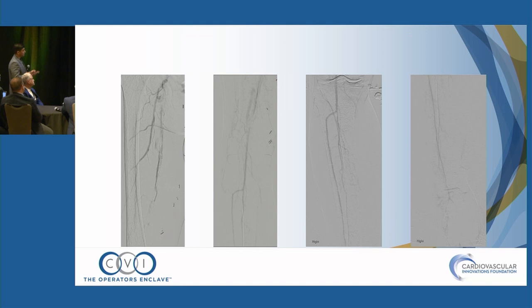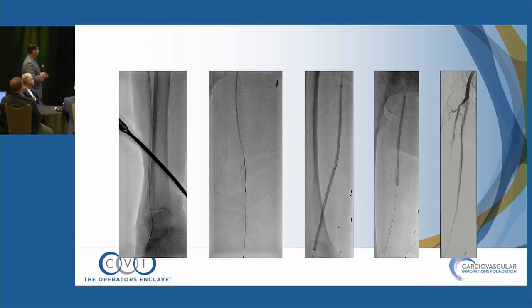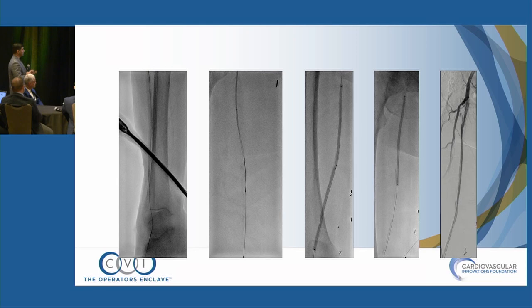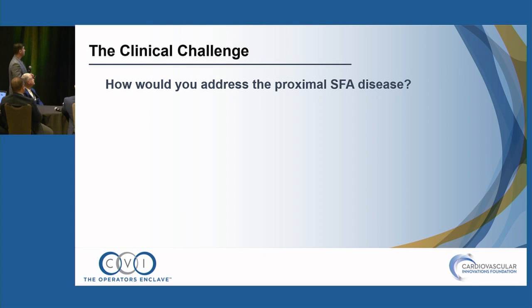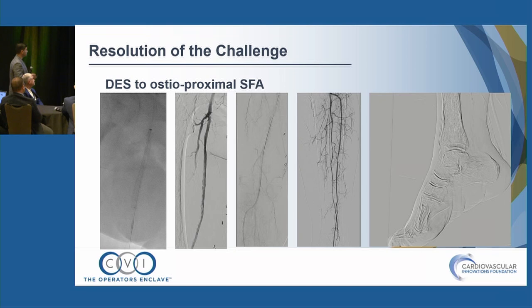Knowing there was extensive dissection, I went retrograde, went sub-intimal, rendezvoused, externalized, did PTA and DCB — then an extensive proximal SFA dissection remained with a small perforation handled with balloon tamponade. The panel response for how to address the proximal SFA: no-brainer — DES. With extensive flow-limiting dissection, go from healthy to healthy. Extend to CFA, don't miss it. There was still non-flow-limiting SFA dissection, but pop looked good with two-vessel runoff. This was a recent discharge with four-week follow-up scheduled. Five-year DES data from the Zilver PTX trial shows superiority over standard PTA, and DES vs. BMS shows 85% vs. 76% primary patency at one year.